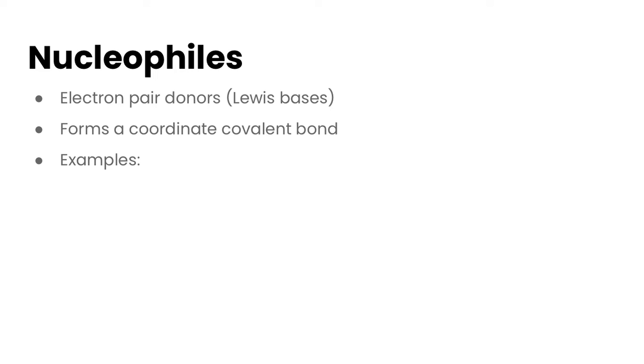Nucleophiles is a fancy word for something that has an electron pair that is able to donate that electron pair. Now these are also called Lewis bases. So Lewis bases are electron pair donors, which are nucleophiles. You can use all of those different terms interchangeably. Because they are able to donate a pair of electrons, they form coordinate covalent bonds with what they are donating their electrons to.